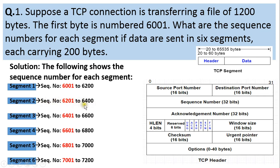Segment 2 carries sequence numbers 6201 to 6400, and the TCP header sequence number field will have 6201. Segment 3 will carry sequence numbers 6401 to 6600 — all together 200 bytes — and the sequence number field will have the initial sequence number 6401. Segment 4 will carry 200 bytes from 6601 to 6800, and the sequence number field will have 6601, since it always carries the first byte number in the segment.